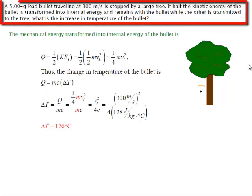It says we've got a 5 gram lead bullet traveling at 300 meters per second and it's stopped by a large tree. If half of the kinetic energy of the bullet is transformed into internal energy and remains with the bullet while the other is transmitted to the tree, what is the increase in temperature of the bullet?